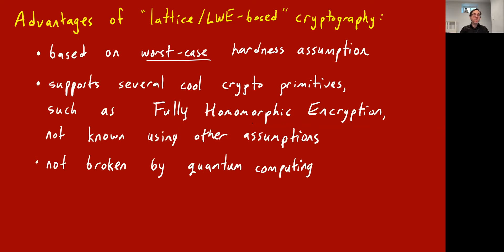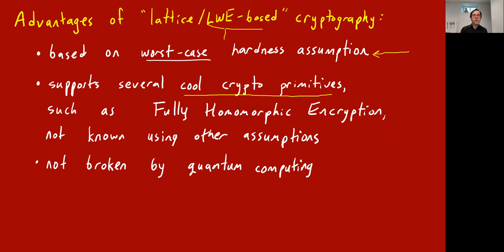This is a new approach to cryptography — basing it on LWE or lattice-based problems. It's quite different from previous approaches invented in the 60s and 70s that are based on number theory. One cool thing about Regev's theorem is he showed his assumption is true based on a worst-case hardness assumption about some problem, which hadn't really been seen before. Over the last 15 years, people have found cool cryptographic primitives they wanted that they know how to get based on LWE assumptions but do not know how to get from RSA or hardness of factoring.